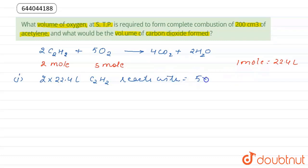5 into 22.4 liter of oxygen. Then 200 centimeter cube, that can be written as 0.2 liter of C2H2, would react with 5 into 22.4 liter divided by 2 into 22.4 liter multiplied by 0.2, and here we get 0.5 liter of O2.